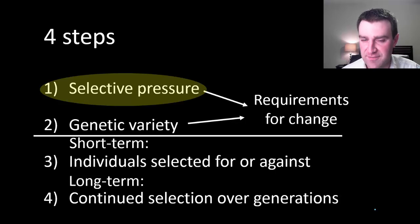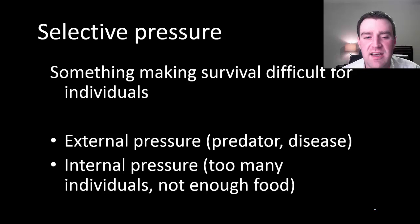If we start by thinking of the selective pressure first, what is that? I want to argue that's just anything that's making survival difficult for individuals. Sometimes that can be an external factor to the population, like some kind of predator eating individuals, or maybe some kind of disease making individuals sick and causing them to die. Maybe sometimes the selective pressure can actually come within the population too. Maybe there's just too many individuals in the population, and there's just not enough food and resources for everybody to survive. That might drive the evolution as well.